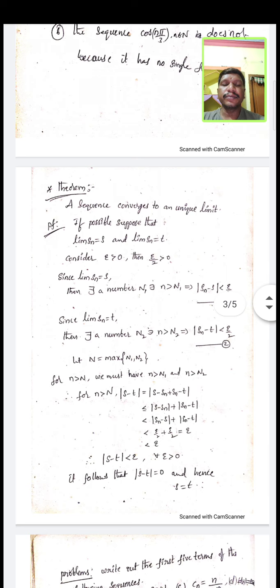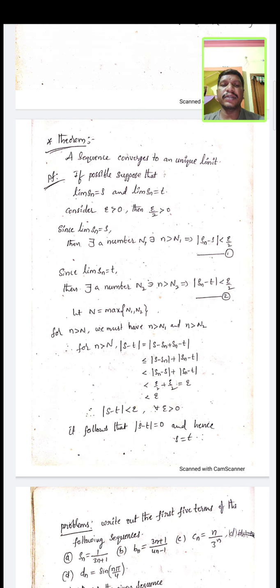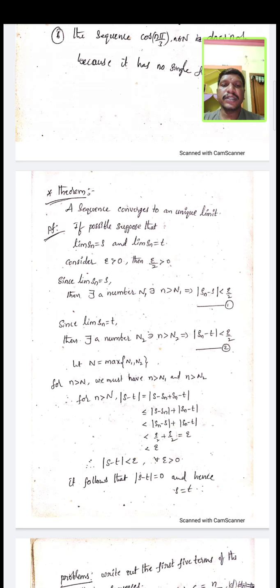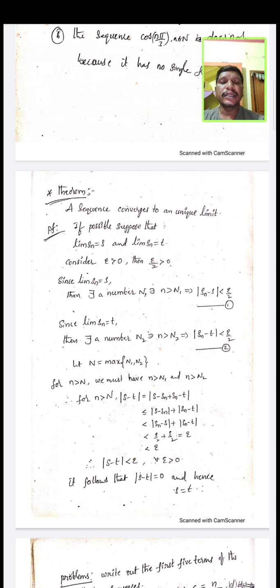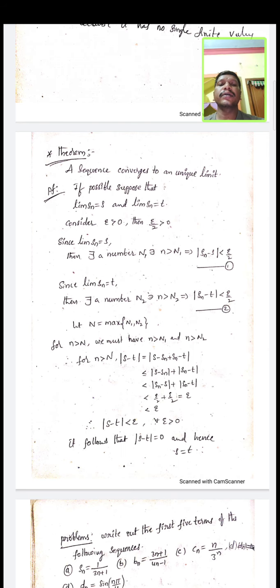We observe one very important theorem for examination purposes. The theorem states: a sequence converges to a unique limit. This means any sequence converges to only one finite limit. If it has more than one limit, such sequences are called divergent or not convergent sequences. According to this theorem, we have to prove that a given sequence has one and only one limit.